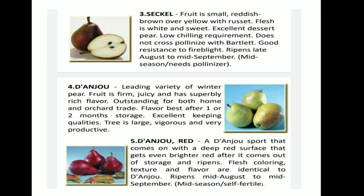Third is Seckel — fruit is small, reddish-brown over yellow with russet. Flesh is white and sweet. Excellent dessert pear. Low chilling requirement. Does not cross-pollinate with Bartlett. Good resistance to fire blight. Ripens late August to mid-September. Fourth is D'Anjo — the leading variety of winter pear. Fruit is firm, juicy, and has a superbly rich flavor. Outstanding for both home and orchard trade. Flavors best after one to two months storage, with excellent keeping qualities. Tree is large, vigorous, and very productive. Fifth is D'Anjo Red — a D'Anjo sport with a deep red surface that gets even brighter red after coming out of storage and ripening. Flesh coloring, texture, and flavor are identical to D'Anjo. Ripens mid-August to mid-September.